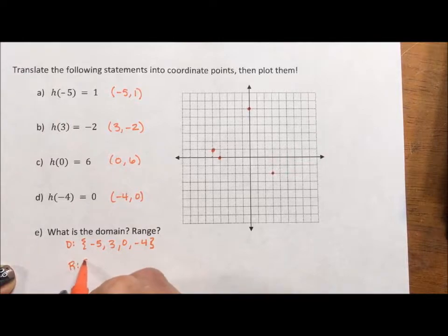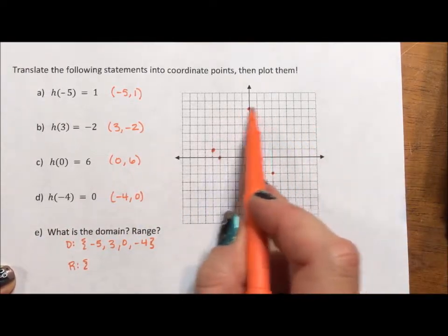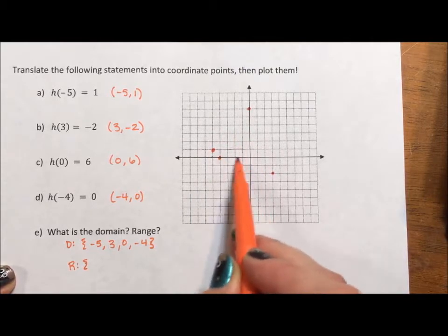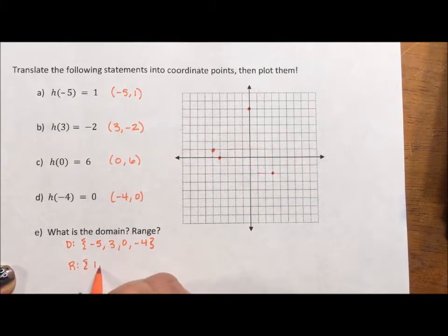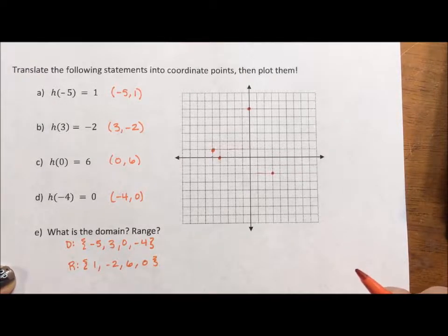For my range, it's my y values. What four values hit the y axis? And we have 1, negative 2, 6, and 0. You don't have to write them in order. You can if you want to.